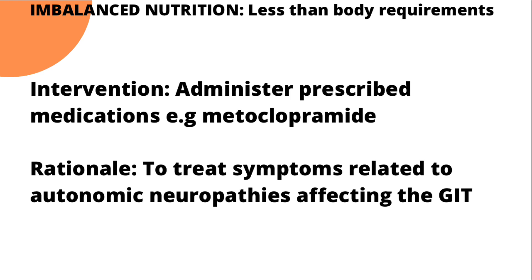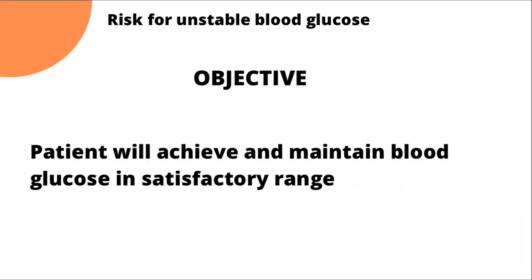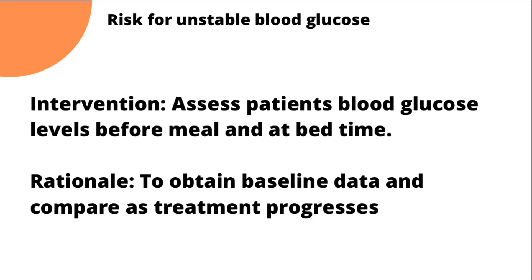Moving to the second diagnosis — risk for unstable blood glucose related to deficient knowledge of diabetes management — the objective is that the patient will achieve and maintain blood glucose in a satisfactory range. The first intervention is to assess the patient's blood glucose level before meals and at bedtime. If admitted, the nurse does this; if not, the patient, caregiver, or someone living with them performs it. The rationale is to obtain baseline data.